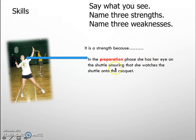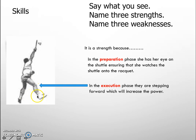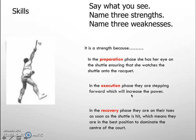Here's an example for badminton. In the preparation phase she has her eyes on the shuttle, ensuring she watches it onto the racket — I'm saying why it's good and what the outcome is. In the execution phase they are stepping forward, which increases the power as they hit the shuttle — that motion from back to front increases power, and I'm explaining the impact on the performance.